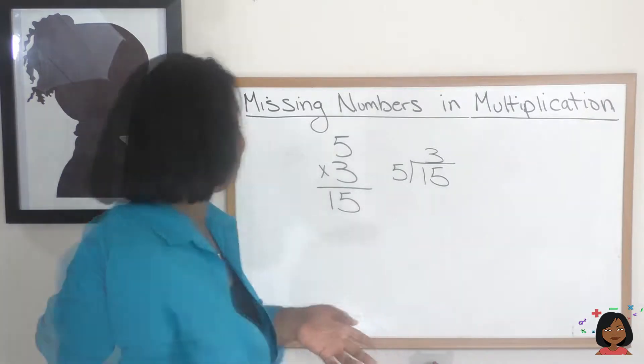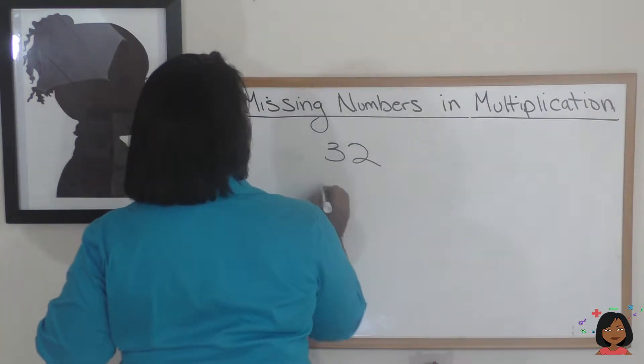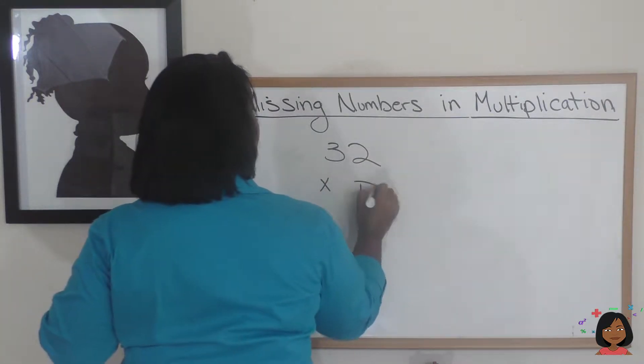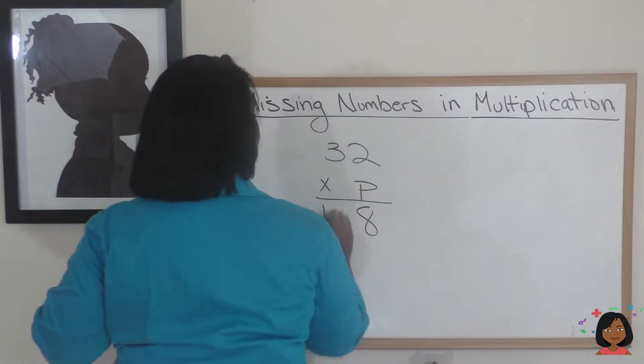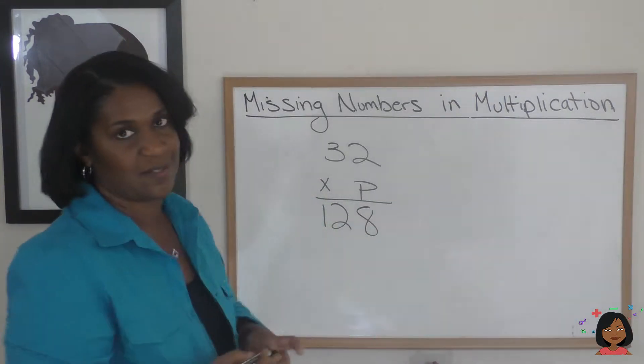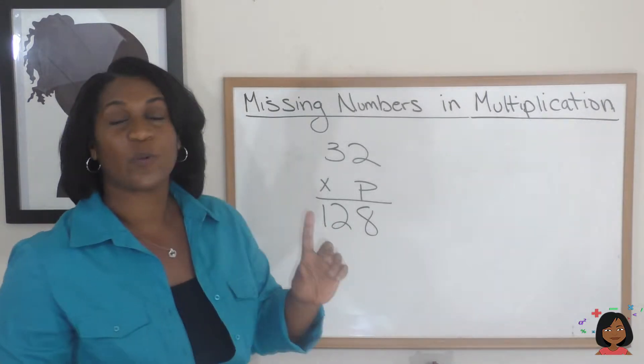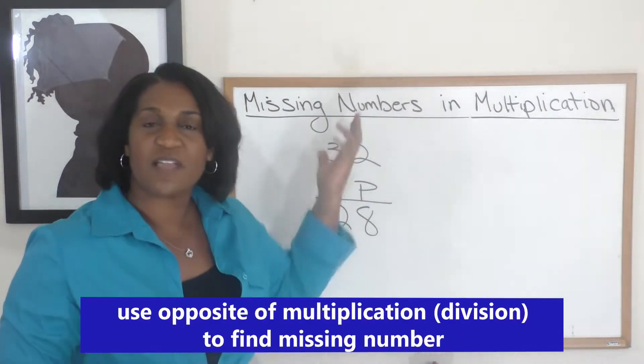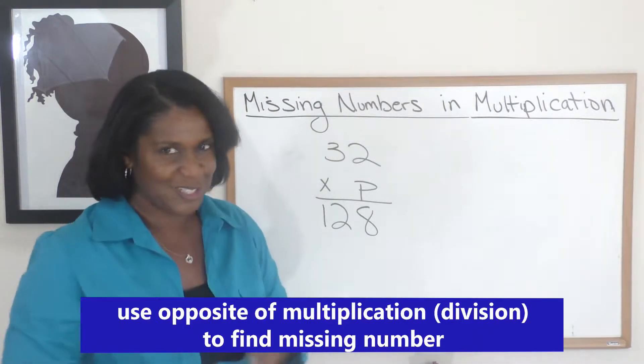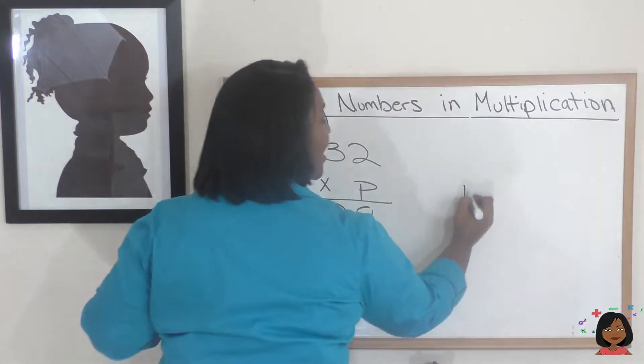Let's try it with a different example: 32 times p is 128. We just saw that we could use division to find the missing numbers in multiplication, so let's use that.